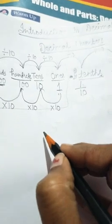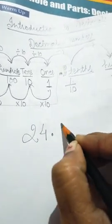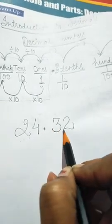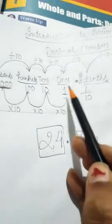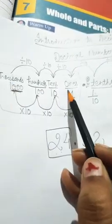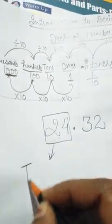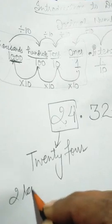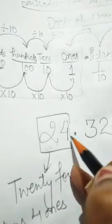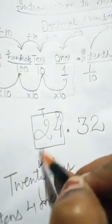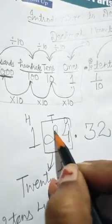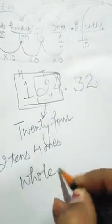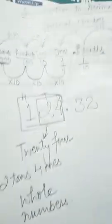For example, if we are having a decimal number like 24.32, then it has 2 parts. One part is before the decimal and one part is after the decimal. The part before the decimal is written according to the place value system: 1s, 10s, 100s, 1000s. So we say it 24, or we can write it as 2 tens and 4 ones. The numbers before the decimal are called whole numbers — as in the chapter's name, whole and parts.